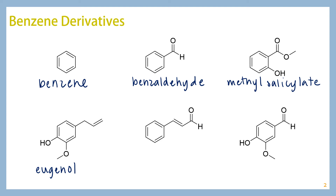Eugenol is one of the compounds that gives a numbing effect. So if you had a toothache, you can actually put some clove oil on it and it can numb the area so that you don't feel the pain as much. Our next compound is cinnamaldehyde — it's found in cinnamon, and it's one of the compounds that gives cinnamon its distinctive smell.